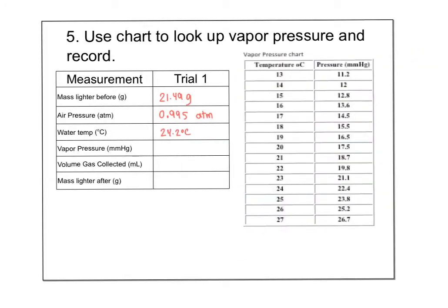Using the chart on the front of the lab to look up the vapor pressure, rounding the water temperature to the nearest whole number gives 24°C, so the vapor pressure is 22.4 mmHg.